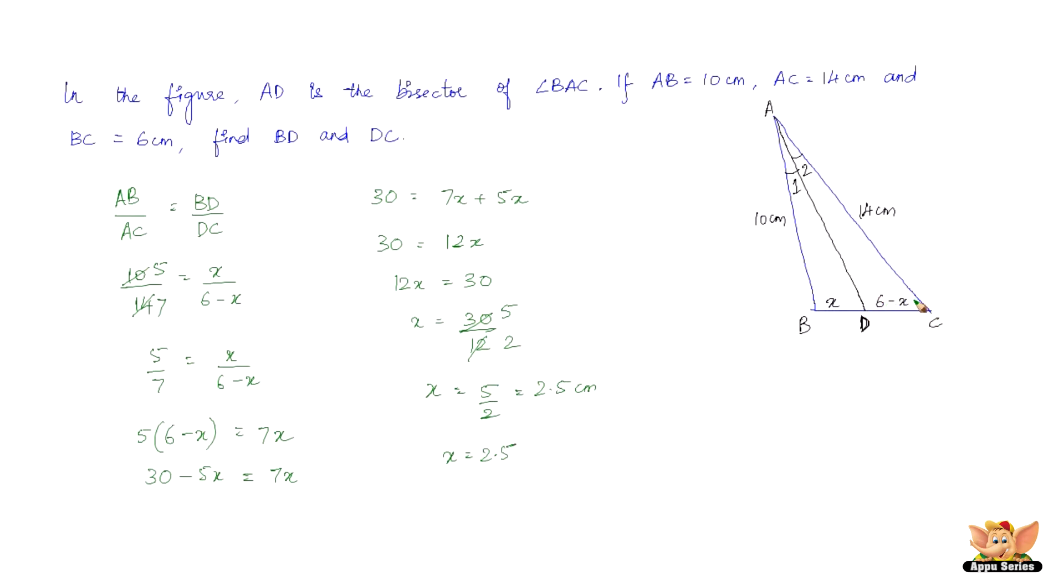So X is nothing but 2.5 and therefore the side DC is going to be 6 minus 2.5 and the side BD is going to be 2.5. So X is going to be 2.5 centimeter.